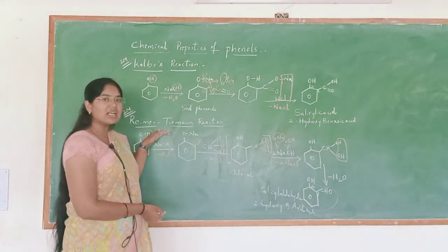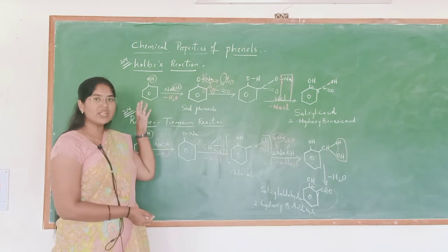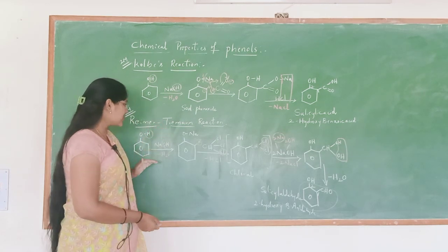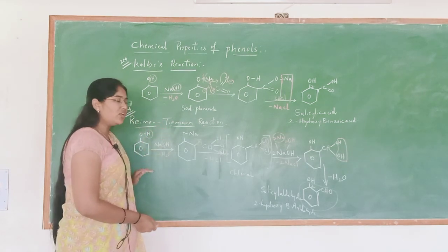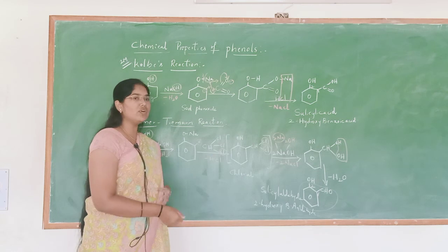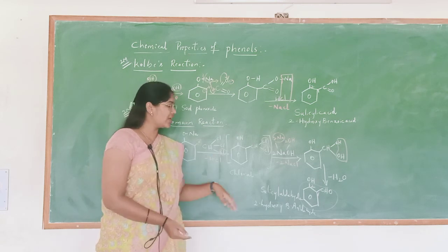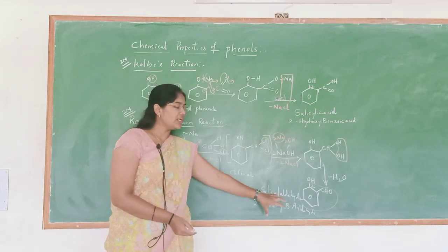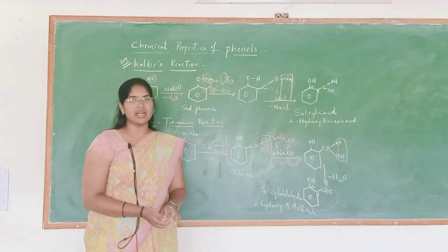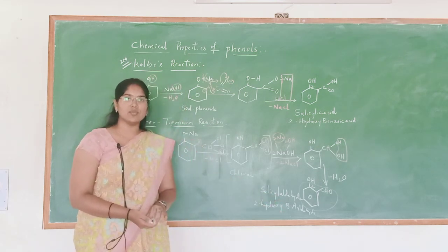So that is known as the Reimer-Tiemann reaction. This is the last chemical property of phenol. When phenol undergoes reaction with chloroform in the presence of sodium hydroxide, it finally gives salicylaldehyde, that is 2-hydroxybenzaldehyde.